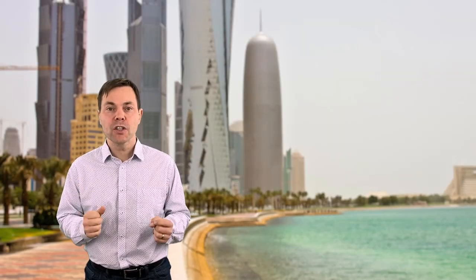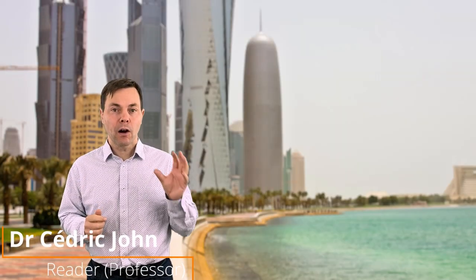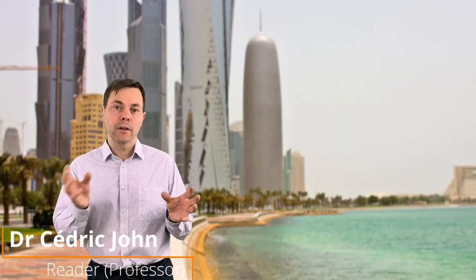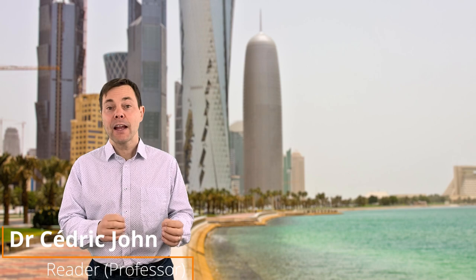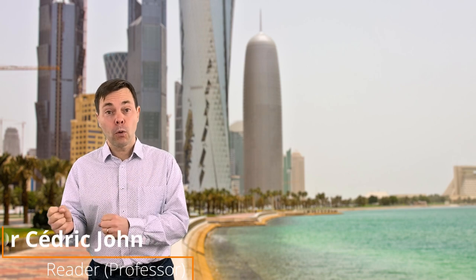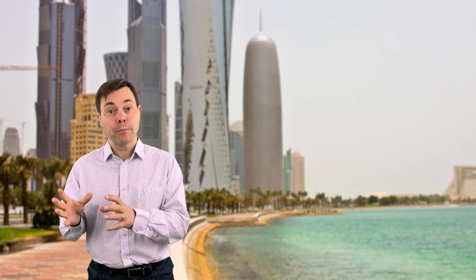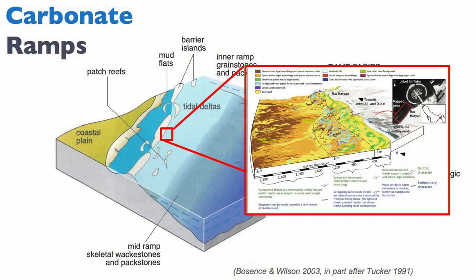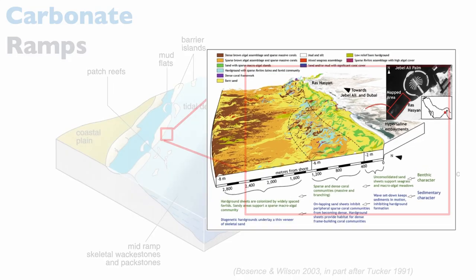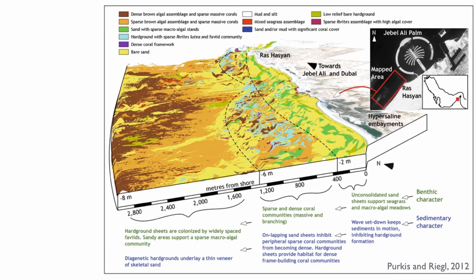Now let's look at the relationship between carbonate sand with a little bit of clastic sand and the formation of corals on that ramp in the Gulf. Sam Perkis did a lot of work on this and I'm showing you here his model.